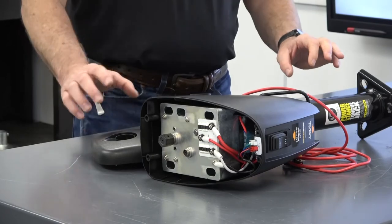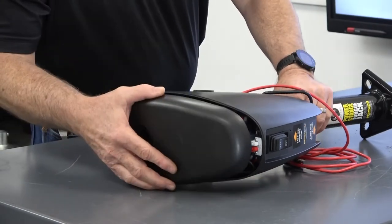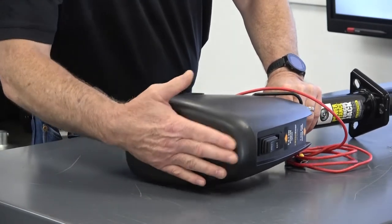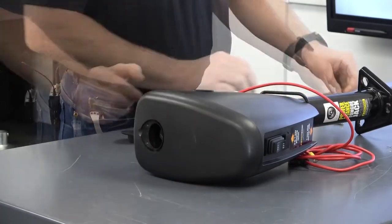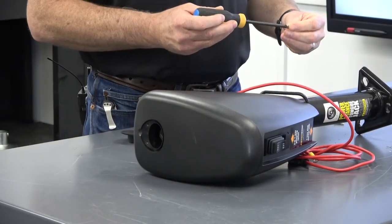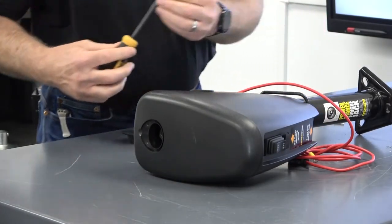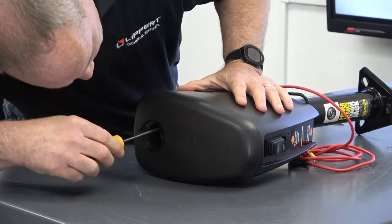Dry-fit the PowerStance Tongue Jack's head cover onto the head cover assembly. Using a Phillips-head screwdriver, install two retaining screws into the mounting points inside of the manual override access port.